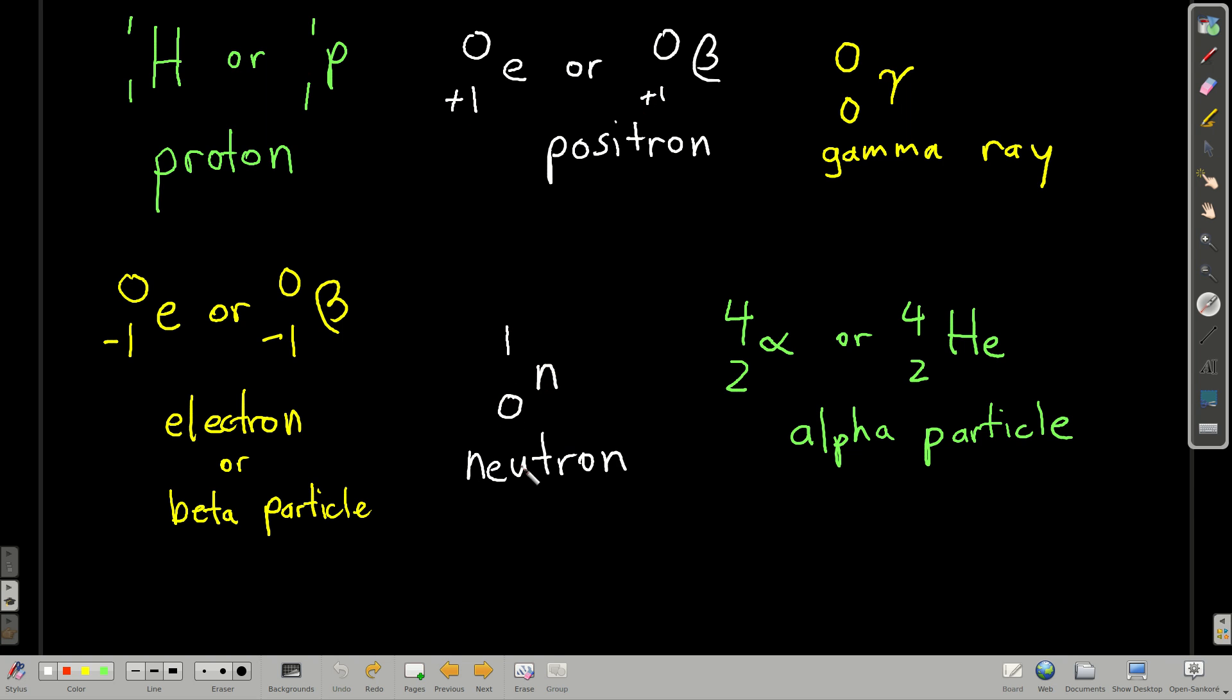A neutron, one and zero, symbol N. A gamma ray is really not a particle. It's really electromagnetic radiation, a high energy photon, so zero and zero. And an alpha particle, which is really a helium nucleus with no electrons. It's either a symbol alpha, the four on top, two on the bottom, or HE, like for helium, four and two. So memorize these guys.